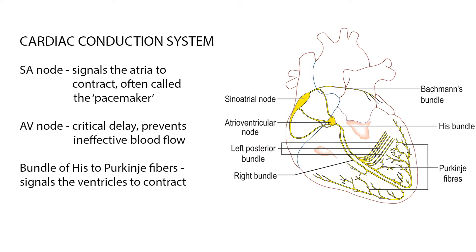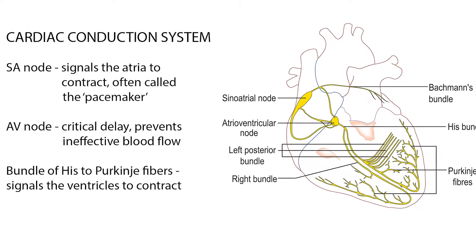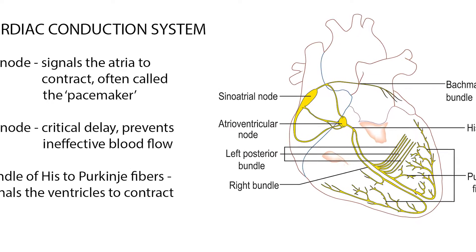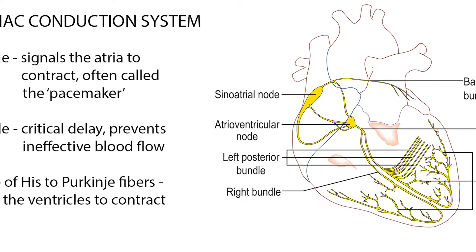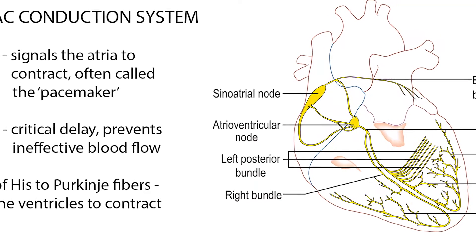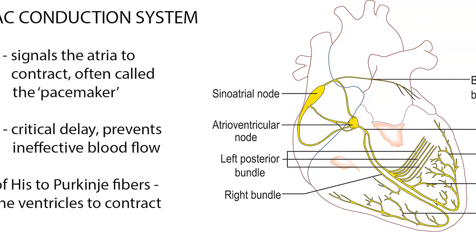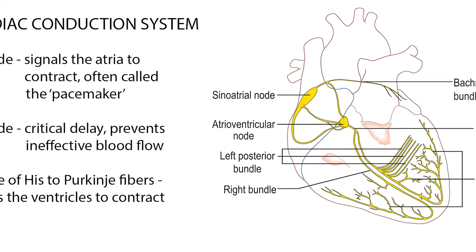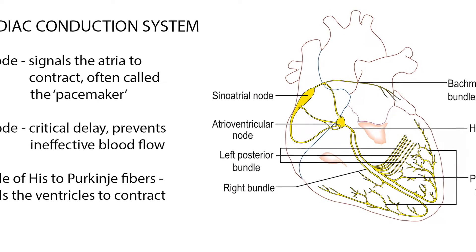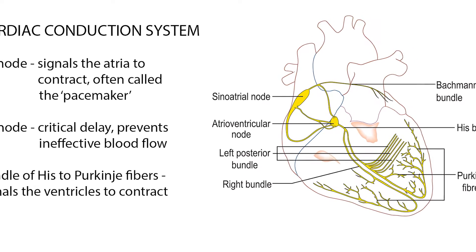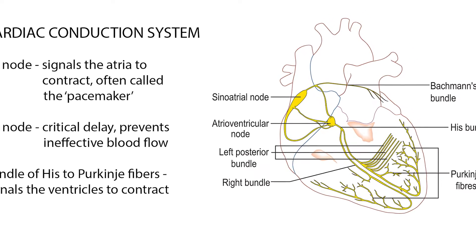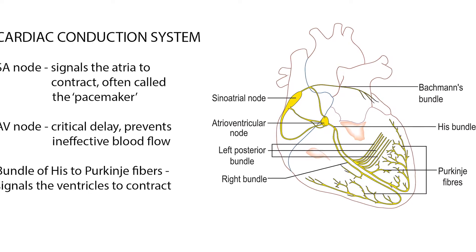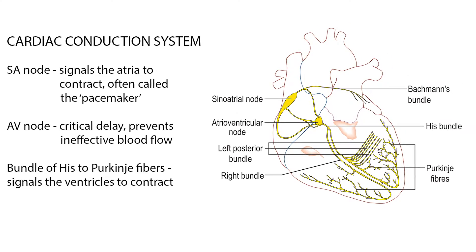Once the atria are activated, the impulse moves down the internodal pathways to the atrioventricular node or the AV node. The AV node functions as a critical delay in the conduction system. This delay prevents the atria and ventricles from contracting at the same time, which would cause an ineffective flow of blood through the heart.